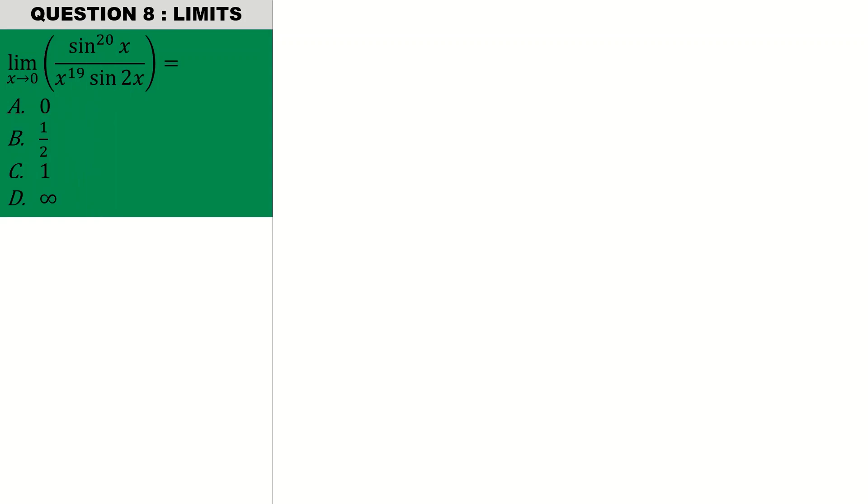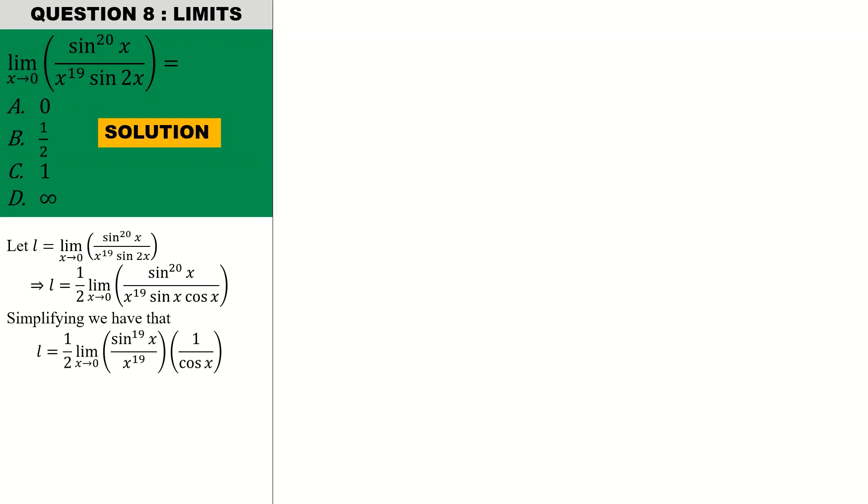Question eight is on limits. The equation reads: the limit as x tends to 0 of that quantity is equal to. Let me recall: if I let L to be my limit, I know the definition of sine 2x is 2 sine x cos x. I can factor out half and get that quantity. From there we simplify and we get that relationship. From standard limits we know that as x tends to 0, sine x on x tends to 1. Hence we have that limit to give us half times 1 to the 19 times 1 divided by 1, because cosine of 0 is 1. Hence the response is half, so option B is correct.